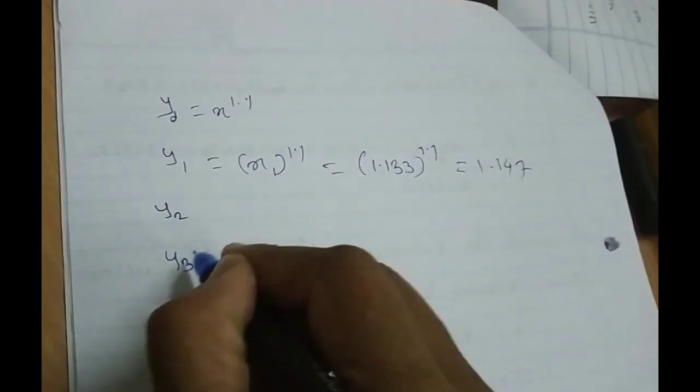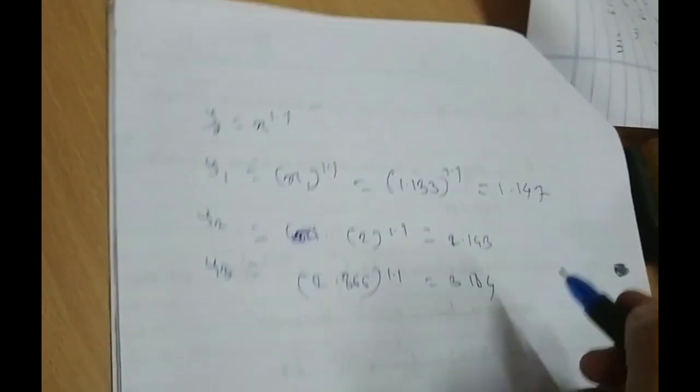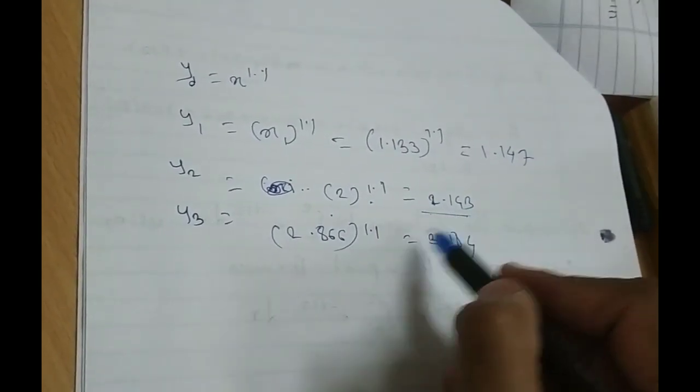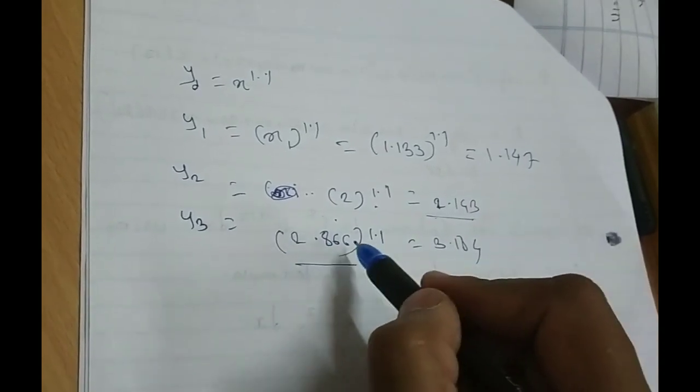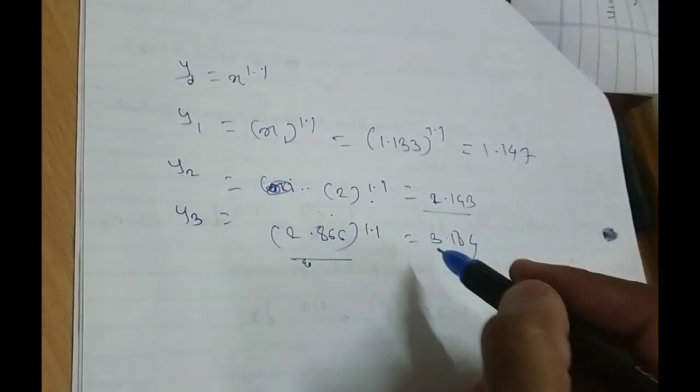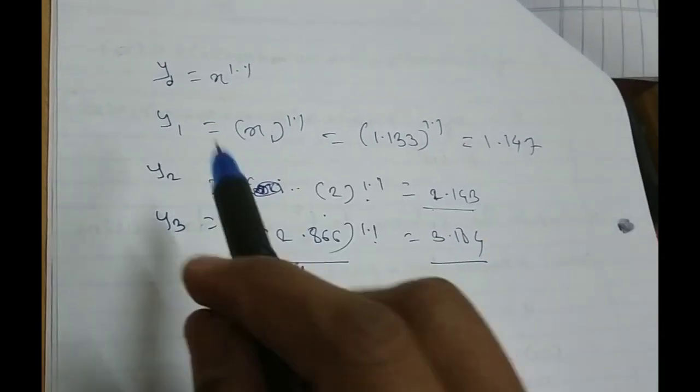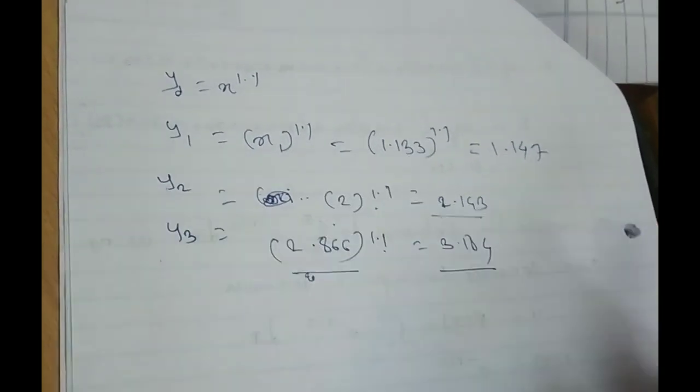Similarly y2 and y3. So 2 raised to 1.1, so it is 2.143. 2.866 is the value of x3 raised to 1.1, it is 3.184. This is how we can able to find out the precision position of x and y.